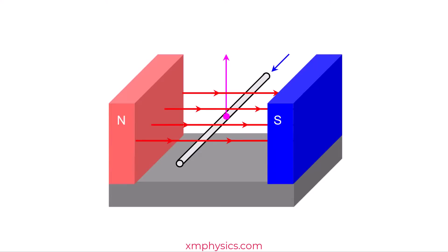People have already figured out all the rules governing this magnetic force, and it goes like this. If the magnetic flux density is B, and the conductor is carrying a current I, and the length of the rod that's in the magnetic field is L, then the magnitude of the magnetic force is simply BIL. The larger the magnetic field strength, the larger the current, the longer the rod, the larger the magnetic force.